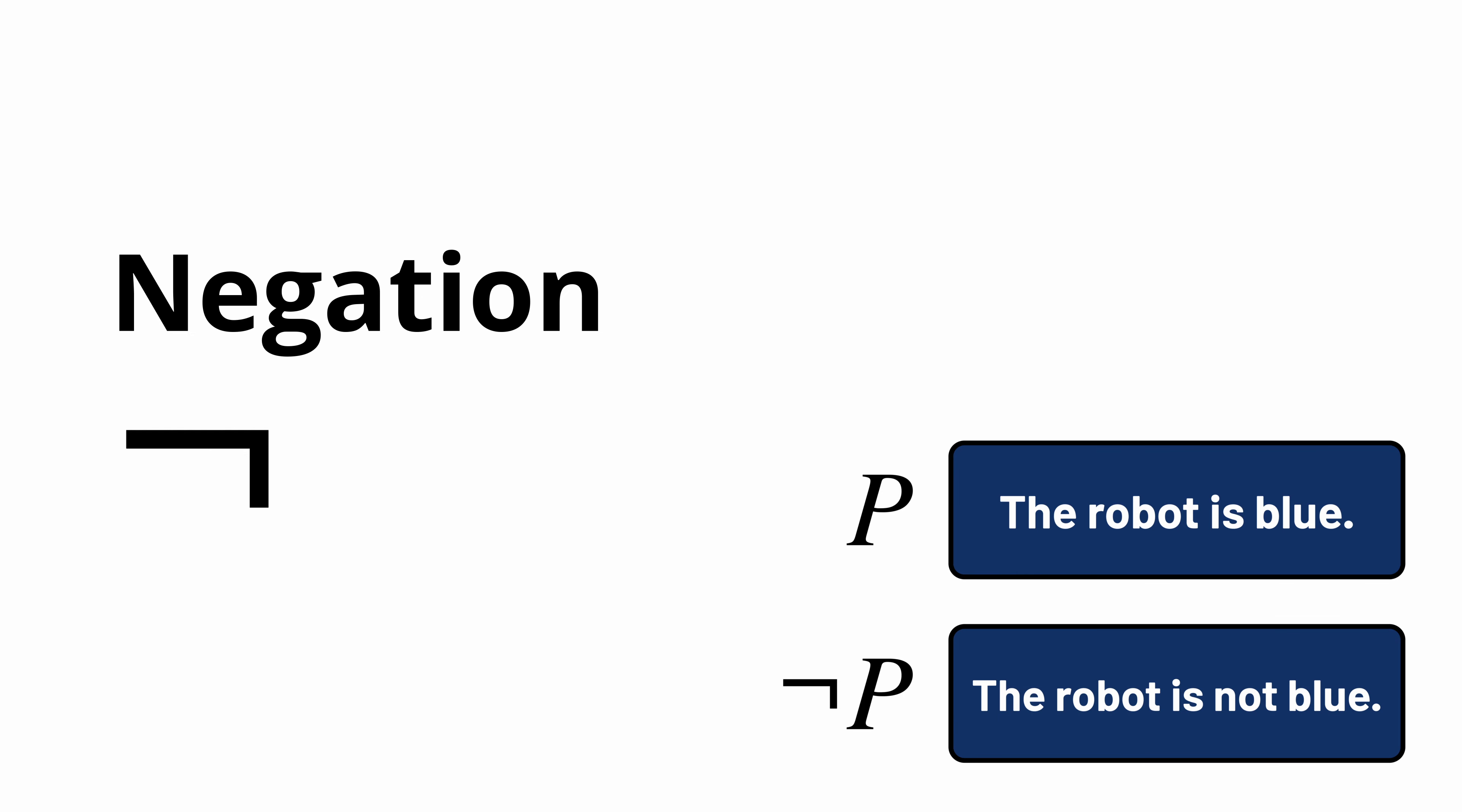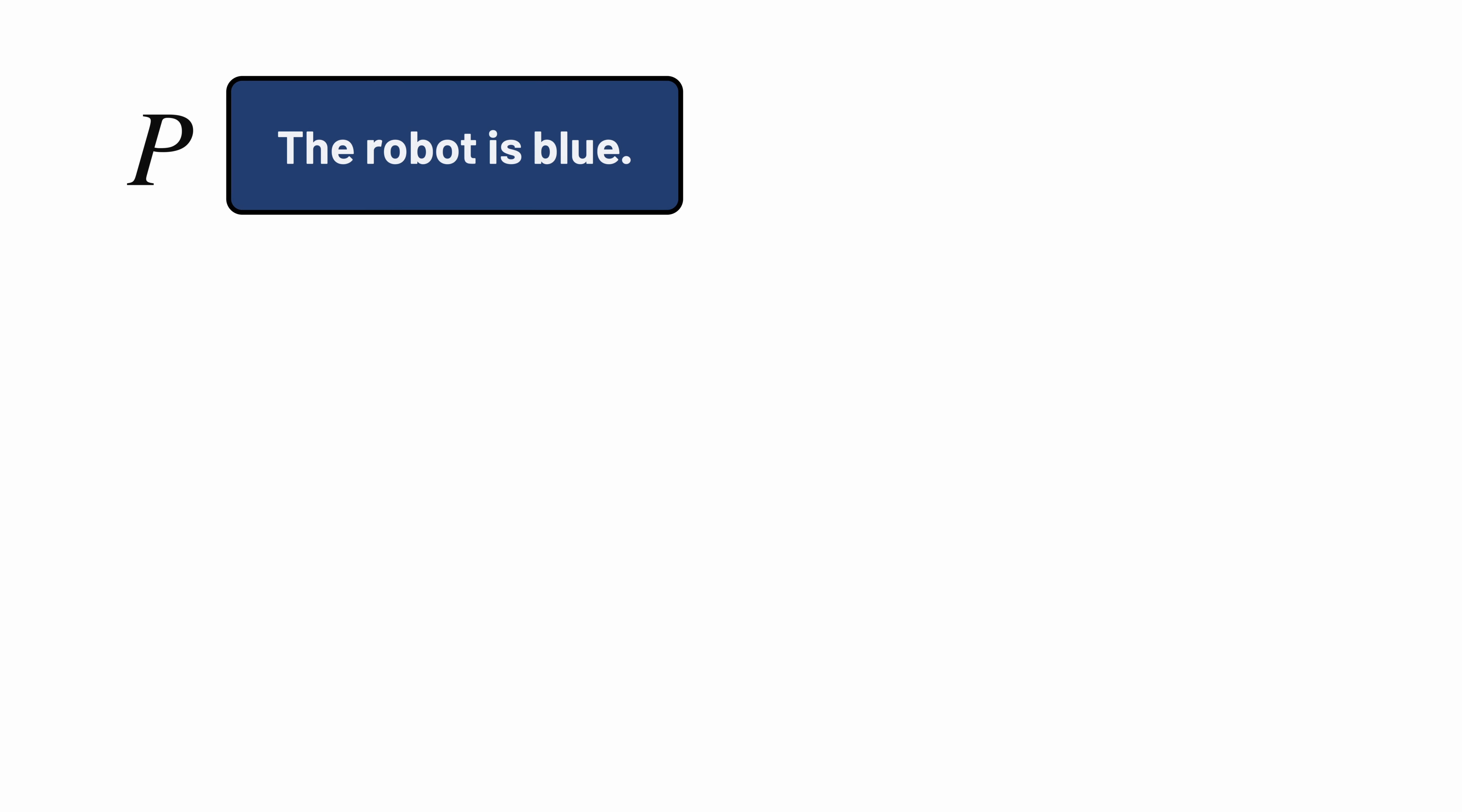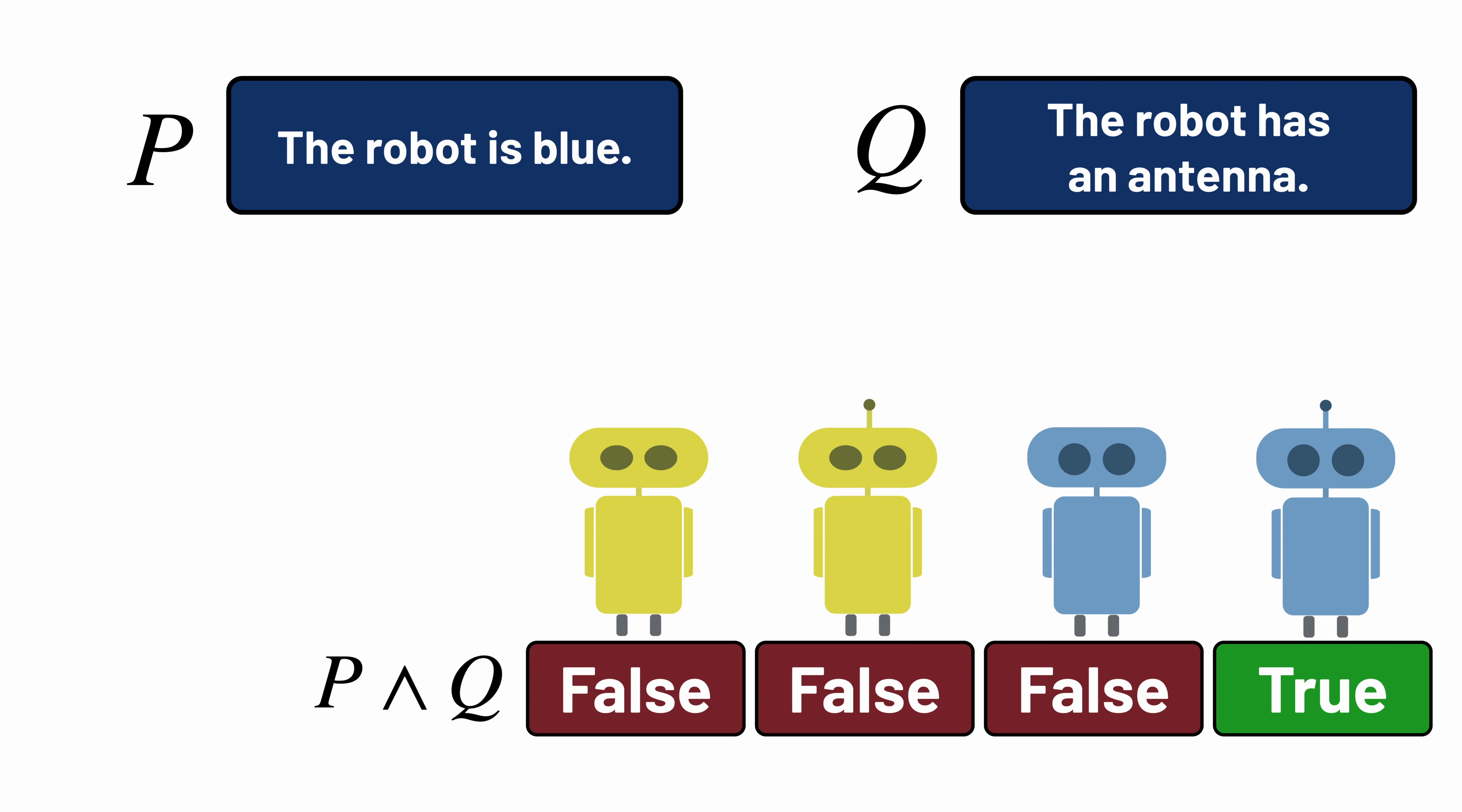If we have more than one logical formula, we can combine them in other ways. This symbol, called conjunction, or AND, takes two logical formulas and expresses the idea that both are true. So, if P is the proposition 'the robot is blue,' and Q is the proposition 'the robot has an antenna,' then the conjunction P AND Q is a formula that's true when the robot in question is both blue and has an antenna as well.